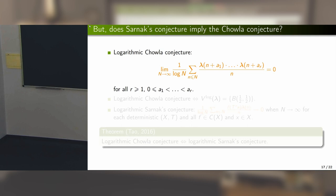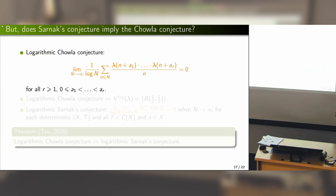Sarnak's conjecture was from 2010. In ergodic theory, people were somehow interested in it, since Chowla's conjecture implies Sarnak's conjecture. If we disprove Sarnak's conjecture, we disprove Chowla. But number theory people believe Chowla holds. So Chowla implies Sarnak, but if we prove Sarnak that's not so dramatic; if we disprove it there's a counterexample to Chowla — but Chowla is believed to be true. This was a kind of controversy.